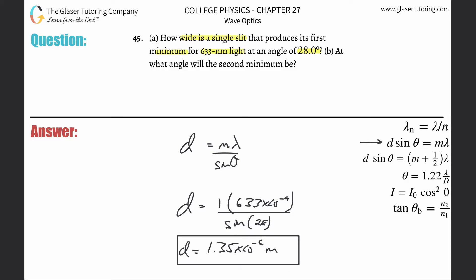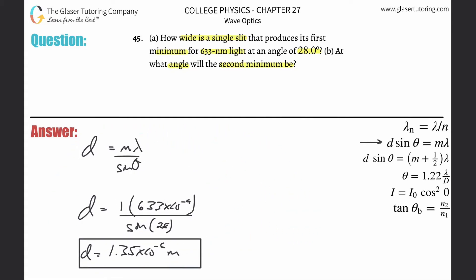And then it says at what angle will the second minimum be? Okay, so now you've got to go back to the original formula. So why don't we move this on over to the side? Let's do now letter B. This was letter A.